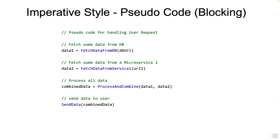Now why is that such a big problem? In highly scalable applications, we cannot afford the threads to block because it affects scalability. To correct this problem, reactive style programming has become quite popular in recent years.